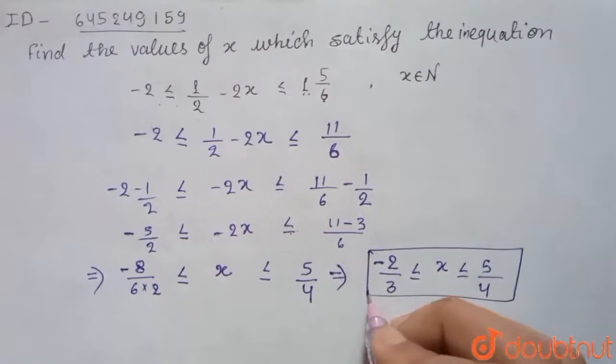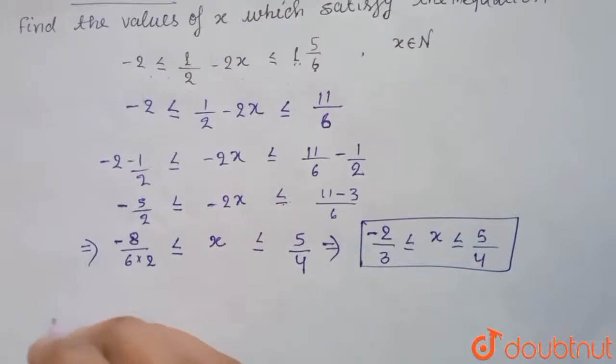So this is -2/3 ≤ x ≤ 5/4. So this is our solution of x. Now let's see on number line.